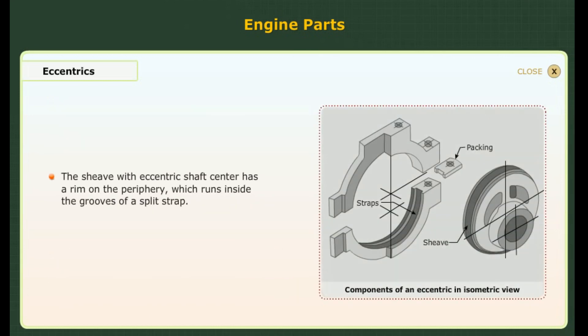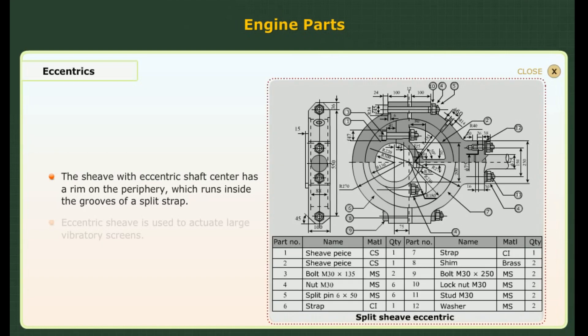The sheave with eccentric shaft center has a rim on the periphery which runs inside the grooves of a split strap. Such an eccentric sheave is used to actuate large vibratory screens.